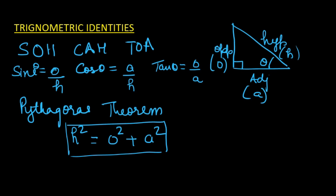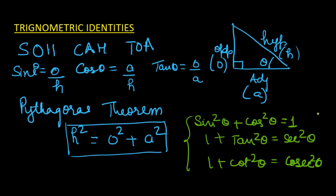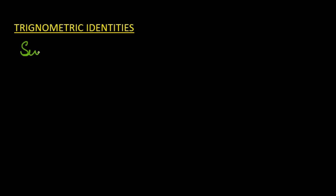So before we begin, there are a total of three trigonometric identities which we will be doing in today's video. The three identities are: sin²θ + cos²θ = 1, then 1 + tan²θ = sec²θ, and 1 + cot²θ = cosec²θ. These are the three trigonometric identities which we will try to derive today. Let us move ahead and prove our first identity.